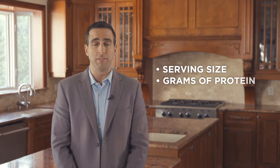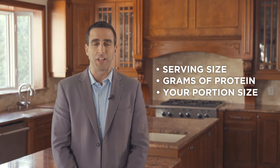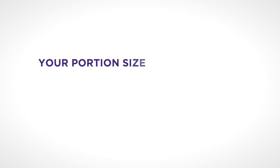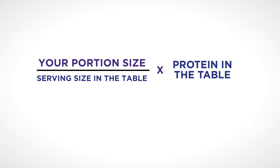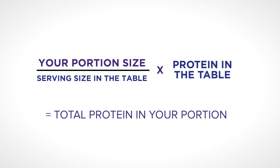What if you have a number of chips that isn't as simple as doubling the serving? What if you have 25 chips? Here is a simple calculation that you can use anytime to figure out how much protein is in your portion. You'll need 3 things: the serving size and grams of protein, both listed in the nutrition facts table, as well as the portion size you will eat. You take your portion size — how much you're going to eat — and divide it by the serving size listed in the table. Then multiply by the grams of protein listed in the table. This will give you the total grams of protein for the portion you eat.